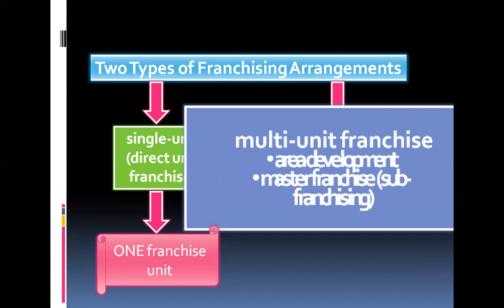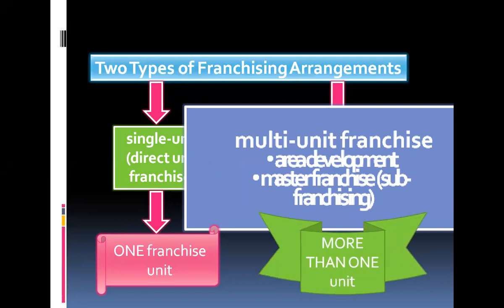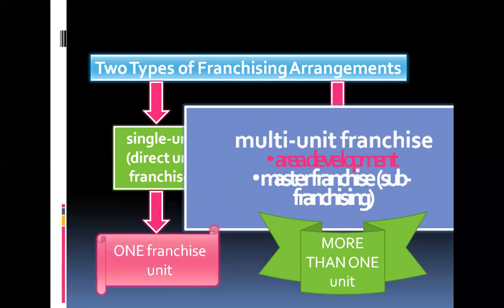A multi-unit franchise is an agreement where the franchisor grants a franchisee the rights to open and operate more than one unit. There are two ways a multi-unit franchise can be achieved. First is through an area development franchise, where a franchisee has the right to open more than one unit during a specific time within a specified area. For example, a franchisee may agree to open five units over a five-year period in a specified territory.